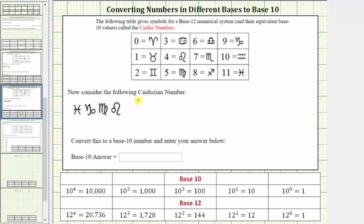We are asked to consider the following Kaidosian number and convert this number to base-10. Let's first identify the whole number indicated by the symbols. This first symbol represents 11, the second symbol represents 9, the third symbol represents 5, and the fourth symbol represents 4.